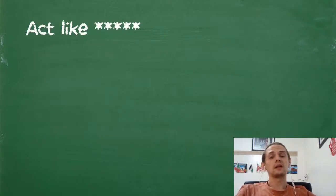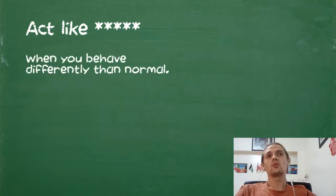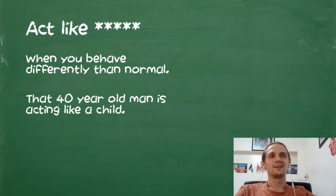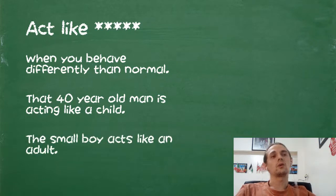Act like. Now this one's very important. I gave it five stars. So when you behave differently than normal, something's not. So that 40-year-old man is acting like a child. We would say this isn't normal. Or that small boy acts like an adult. It's not normal. Kids are supposed to be kids, adults, adults. And if they switch, it's not normal.